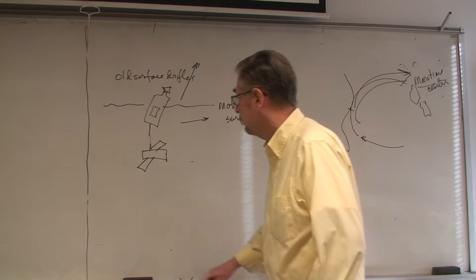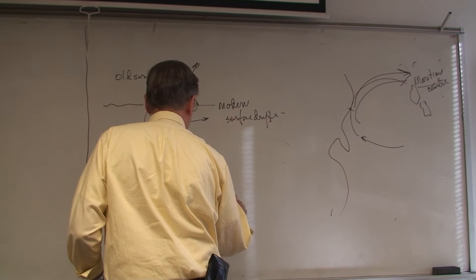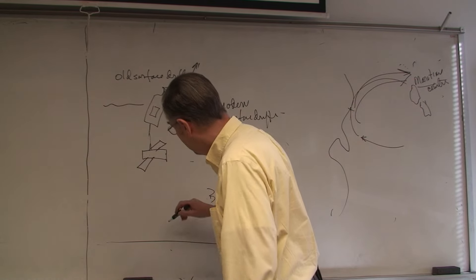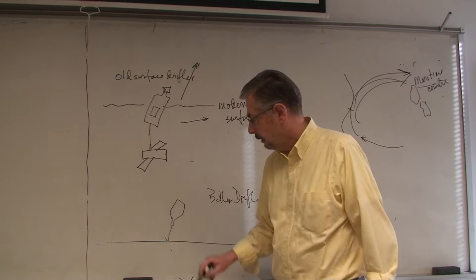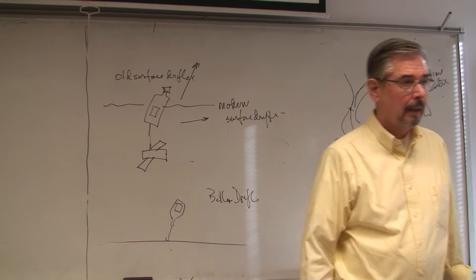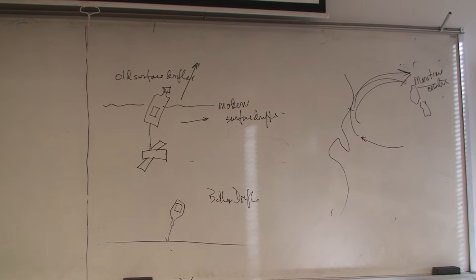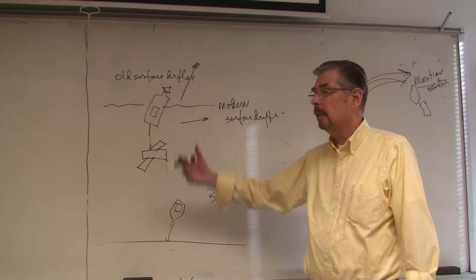There are also bottom currents. To measure them you use a bottom drifter — the same idea, except you make the bottle heavier so it sinks all the way to the bottom and you put a little piece of wire with a hook on it. The currents carry it along the bottom, and when fishing boats drag along the bottom they'll pick up one of these and send it to a marine biology or oceanography laboratory. Bottom currents are very different from upper currents — they're more dense and can go in an entirely different direction.